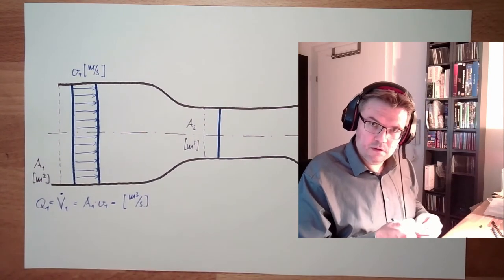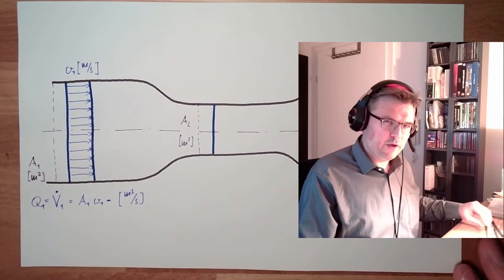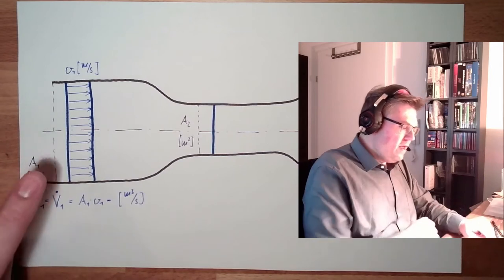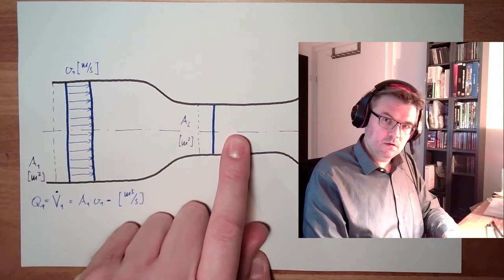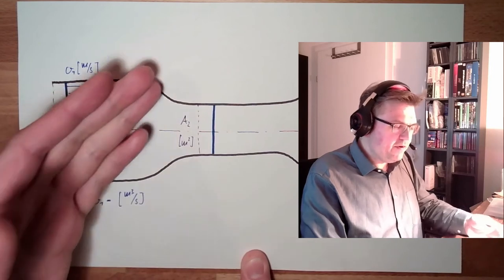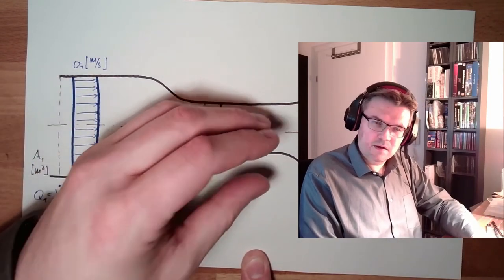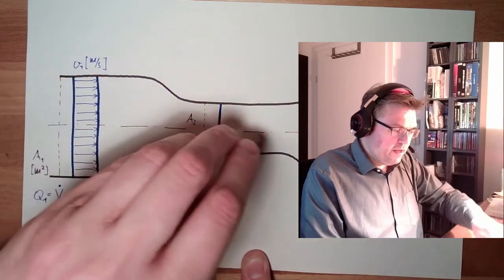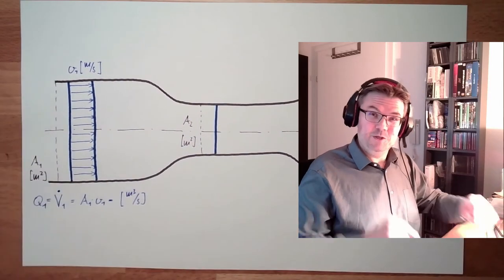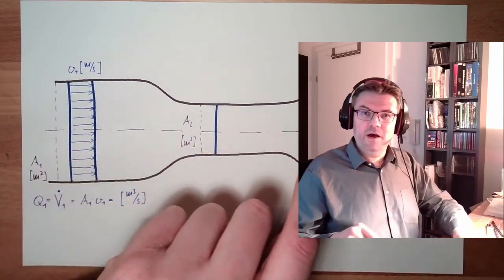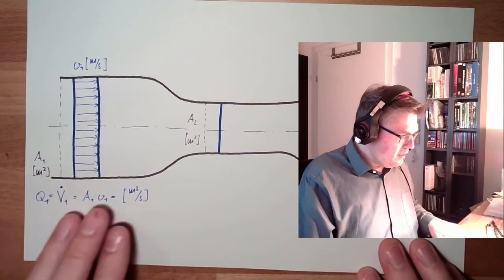Now we come to the big question, the million dollar question, or one cent question. If here is running, let's say, one liter per second, how many liters per second are running here? If there is no leakage, it's also one liter. Clear. If here is one liter, here must also be one liter. If here is more than here, we have somewhere leakage. If here is more than here, we have a strange situation, just dripping inside and on the other end. No, of course this is not working.